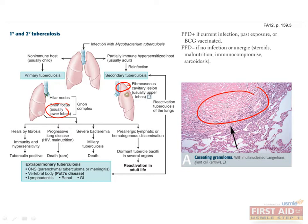Symptoms of secondary TB can include fever, night sweats, weight loss, and hemoptysis. Reactivation of TB can also affect organs other than the lungs, such as the kidneys, gastrointestinal tract, lymphoreticular system, the CNS, or vertebrae. TB affecting the CNS is known as parenchymal tuberculoma or meningitis, while TB affecting the vertebrae is known as Pott's disease and can lead to compression fractures.